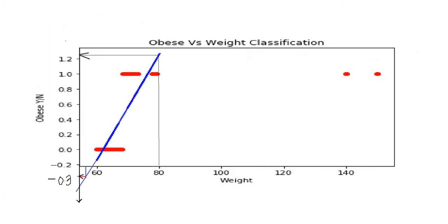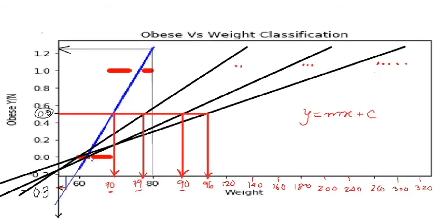This is the problem I showed you previously. The blue line is my first line of best fit. With more outliers we get a second, third, and fourth line of best fit. On the y-axis, the 0.5 threshold value corresponding to my x-axis keeps moving ahead with every iteration, which means it will not classify properly.